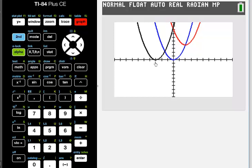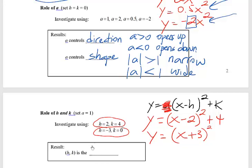So H and K are very easy to understand. Let's write down the result now on the handout. Basically, what we learned is that the ordered pair H, K is the vertex. When the H was 2 and K was 4, the vertex was 2, 4. In the second example, the vertex was negative 3, 0.